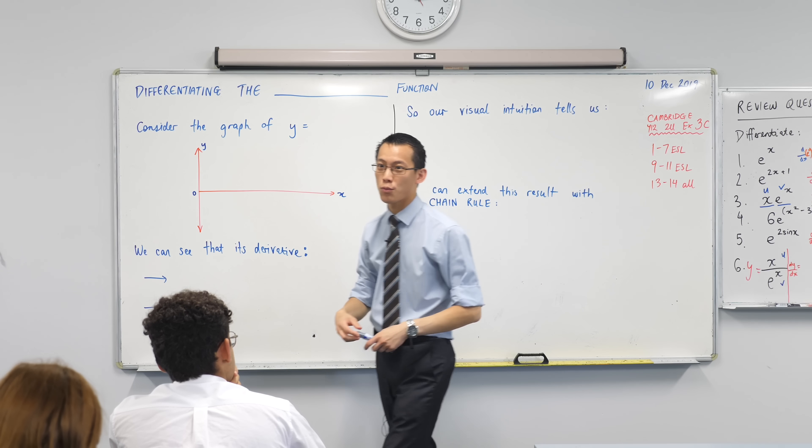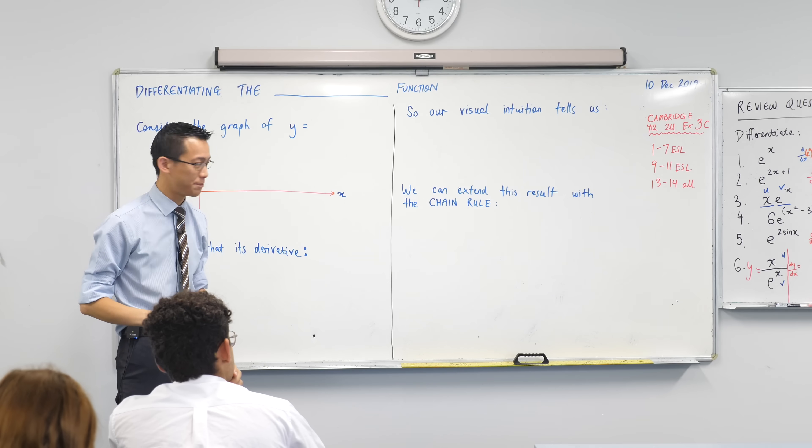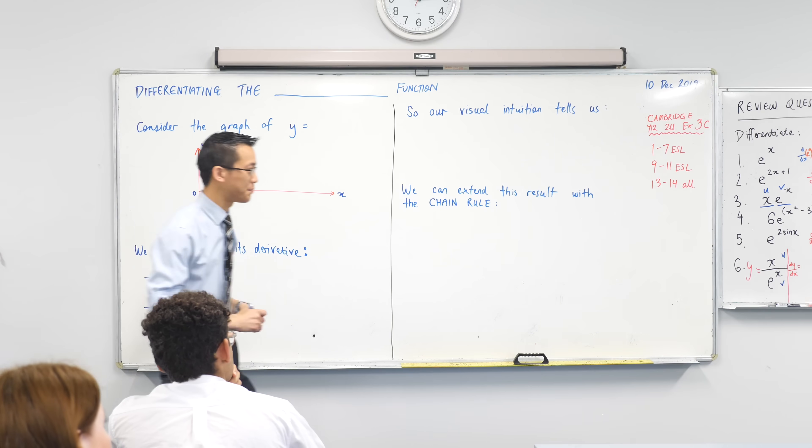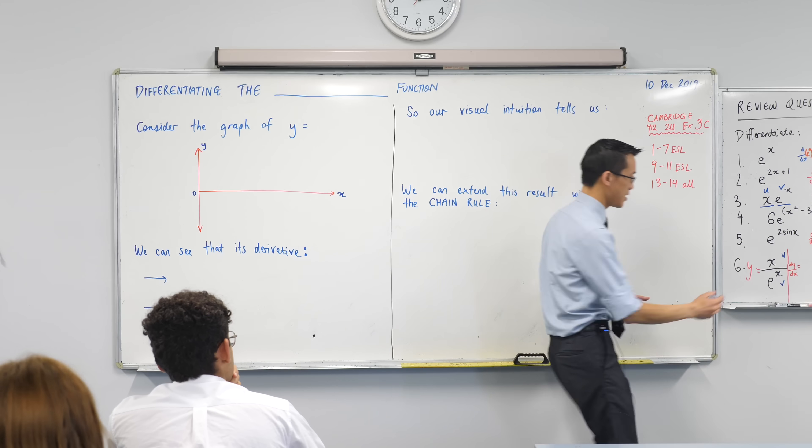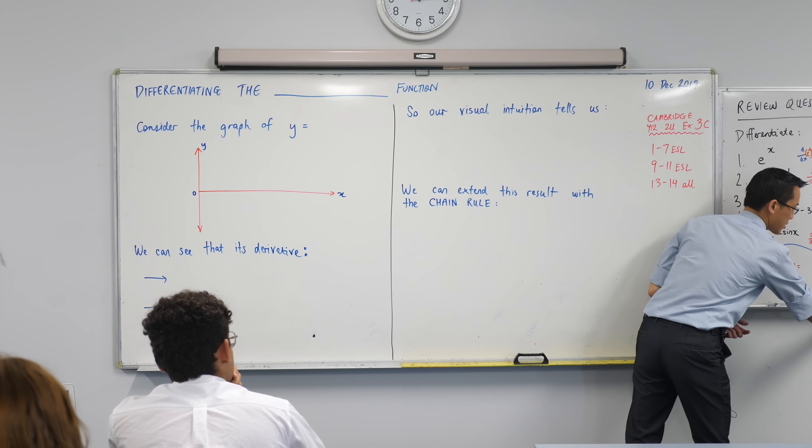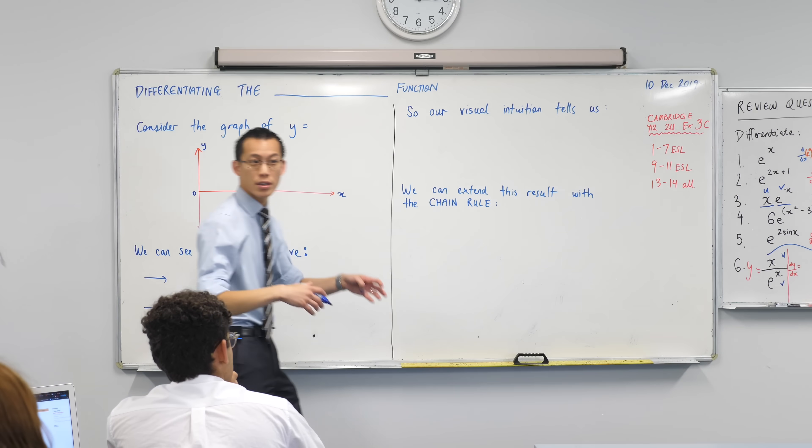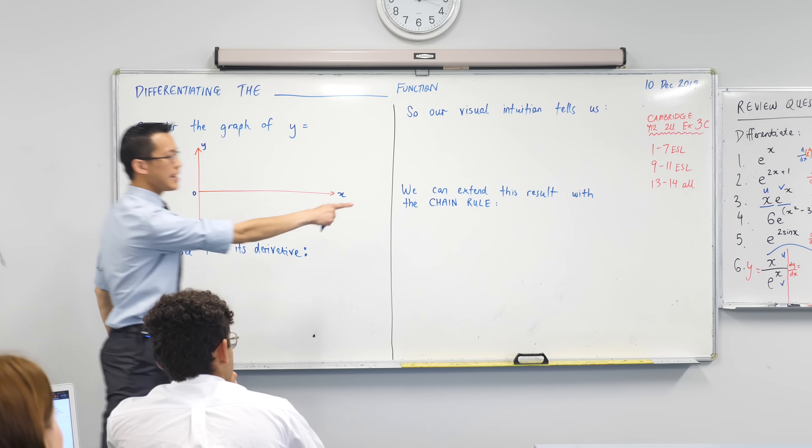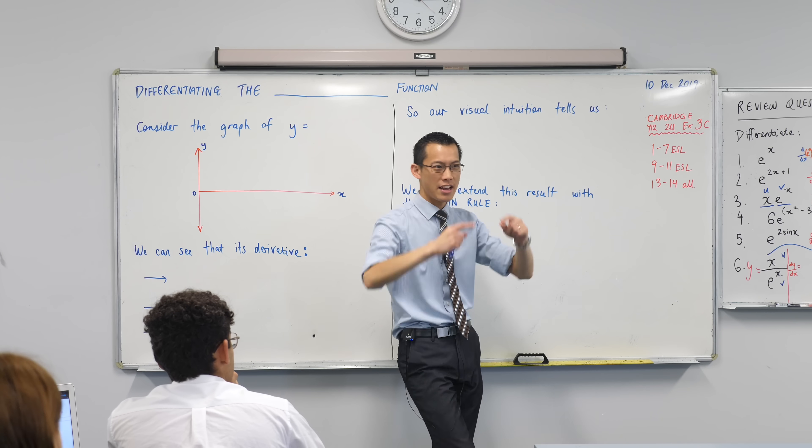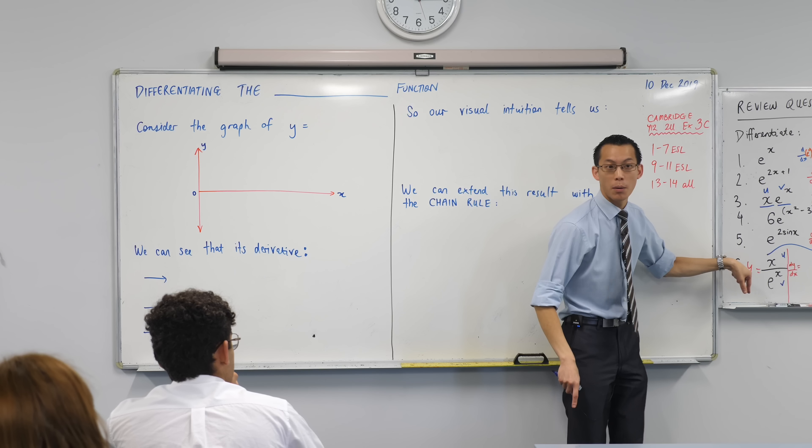It's a quotient. There is though another rule you could have used. I'm not saying whether it's easier or not but look at it again carefully. x over e to the x. Do you agree I could have written this as x e to the minus x? You see what I've done there? I've used index laws to say that e to the x on the bottom I can cross the line change the sign, so it becomes a negative index.